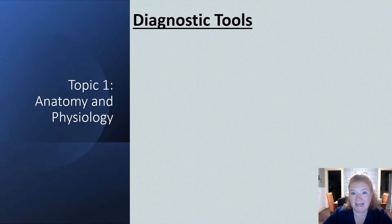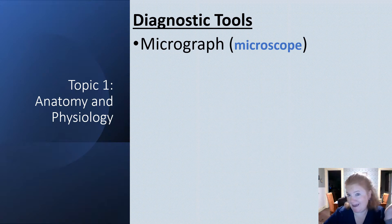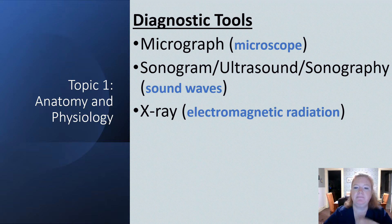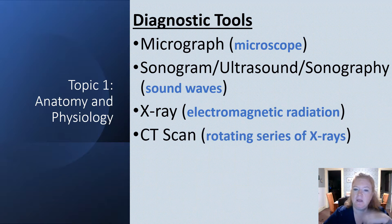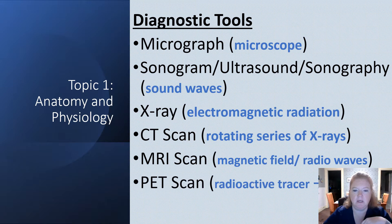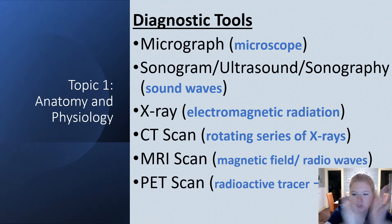Let's talk about diagnostic tools. First, we have a micrograph that uses a microscope. Then we have a sonogram or ultrasound that uses sound waves. Then an x-ray that uses electromagnetic radiation. Then a CT scan that uses a rotating series of x-rays. Then an MRI scan, which uses a magnetic field plus radio waves — important to remember the magnetic field. And a PET scan that uses a radioactive tracer and shows function. PET scan shows function.